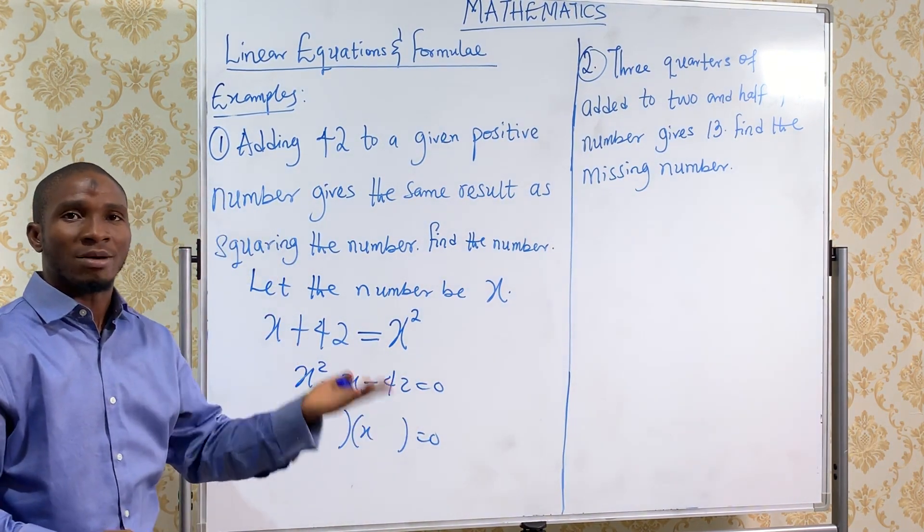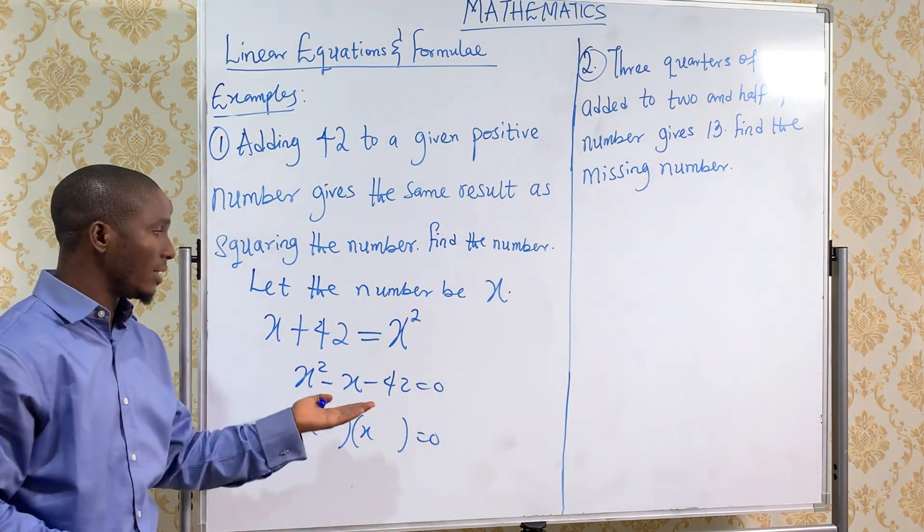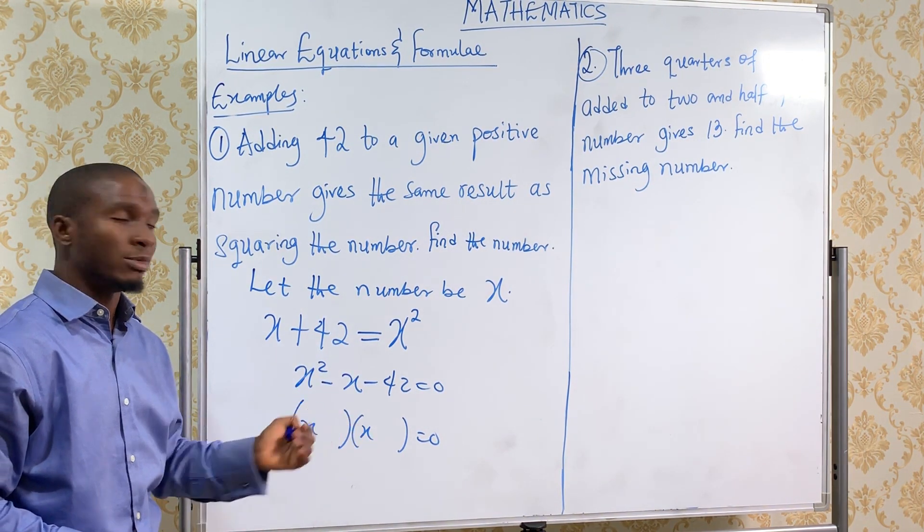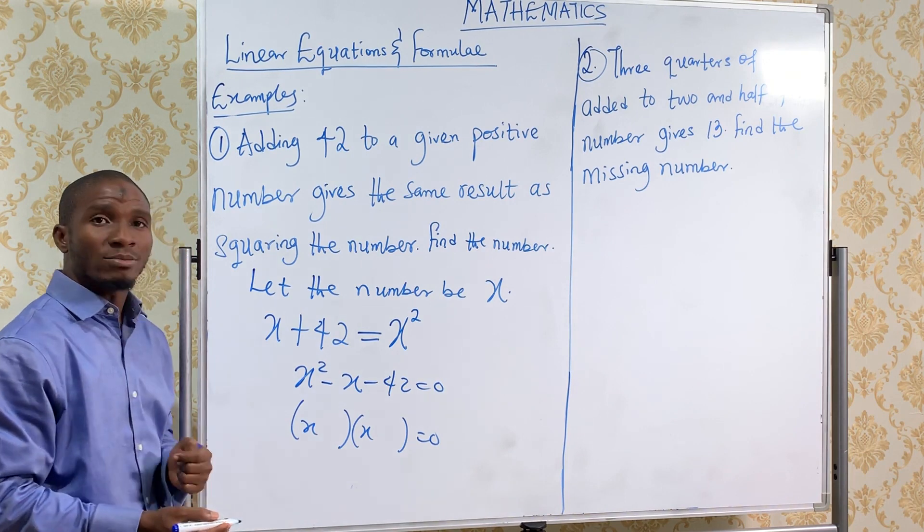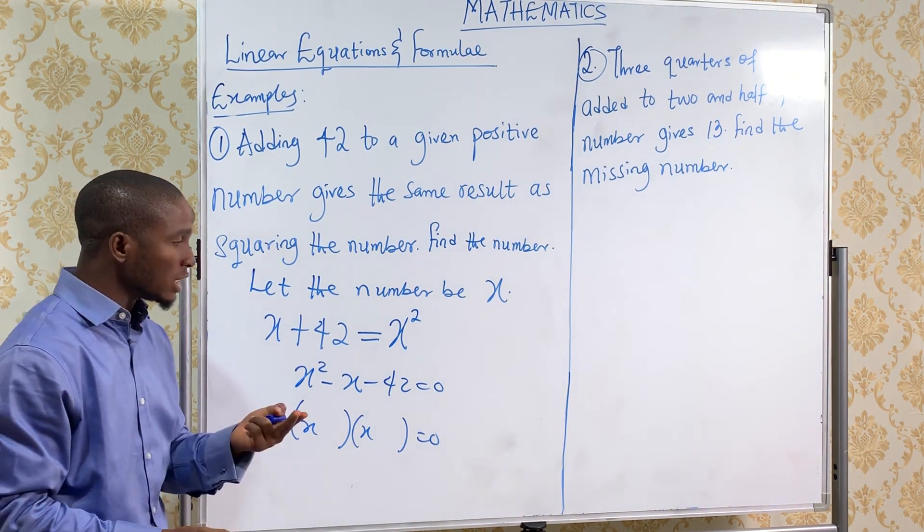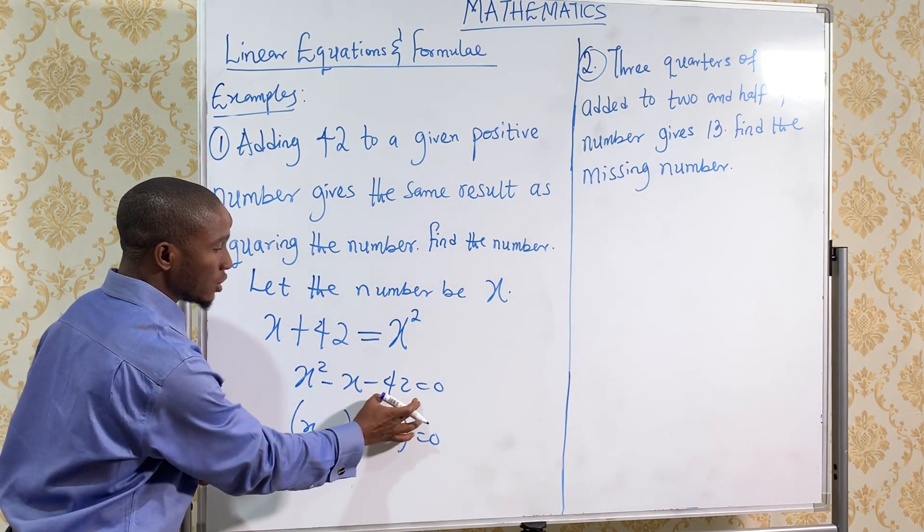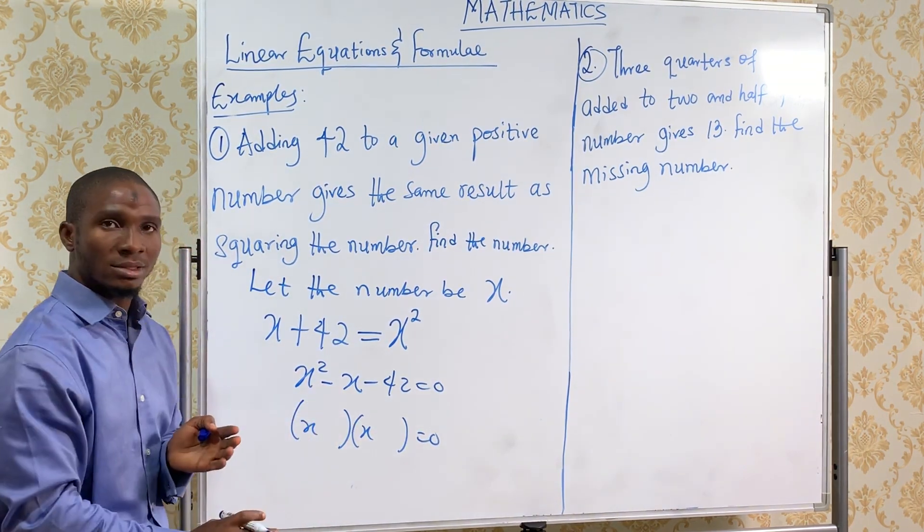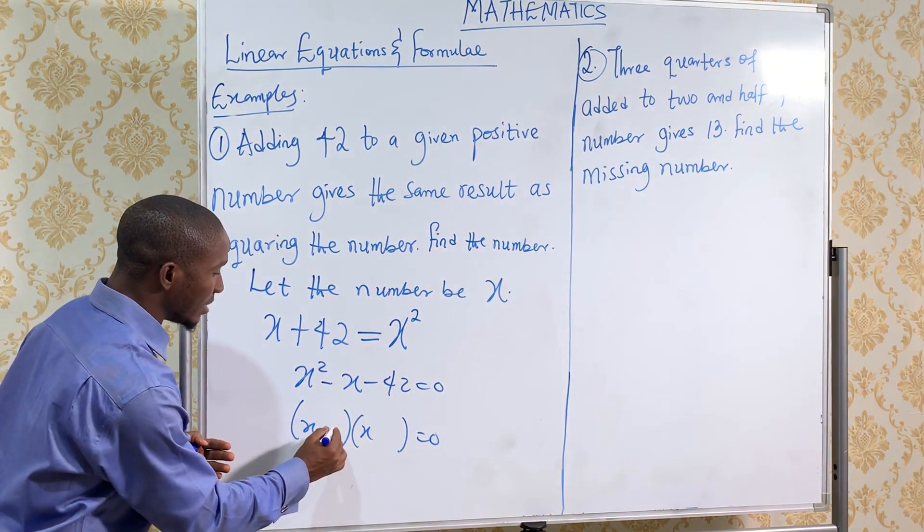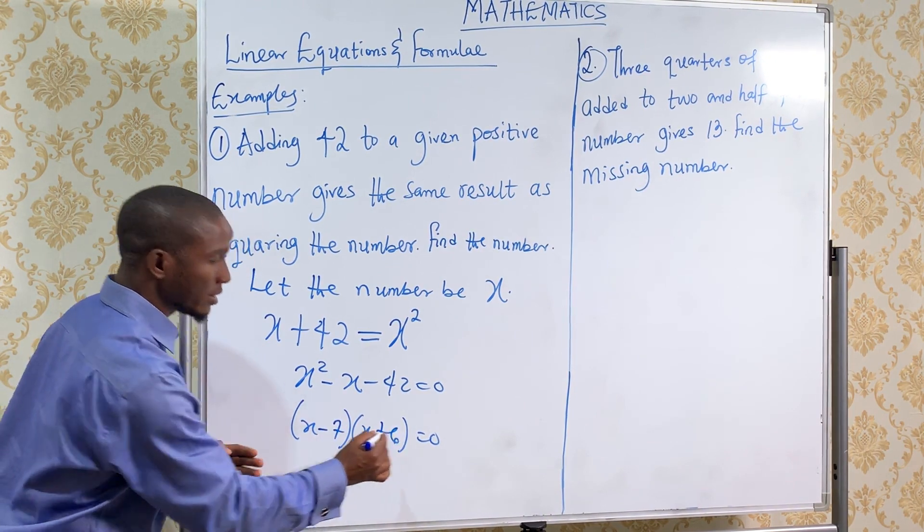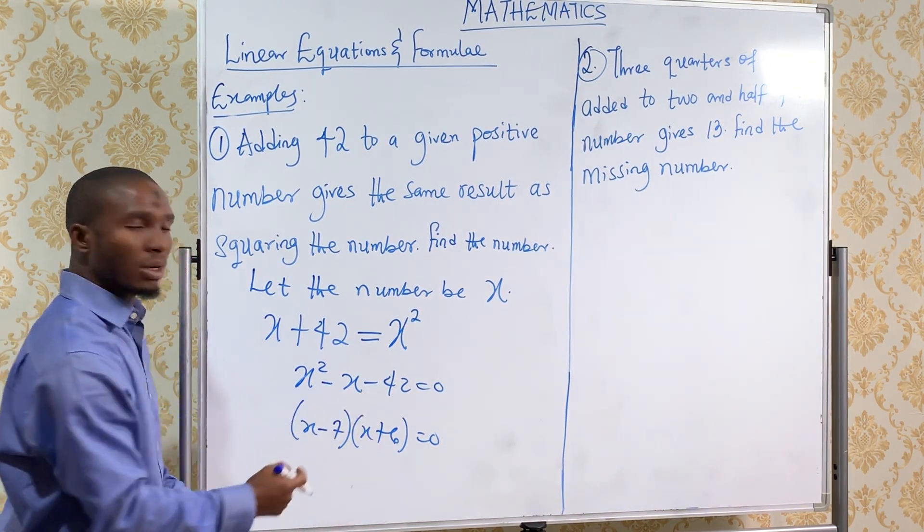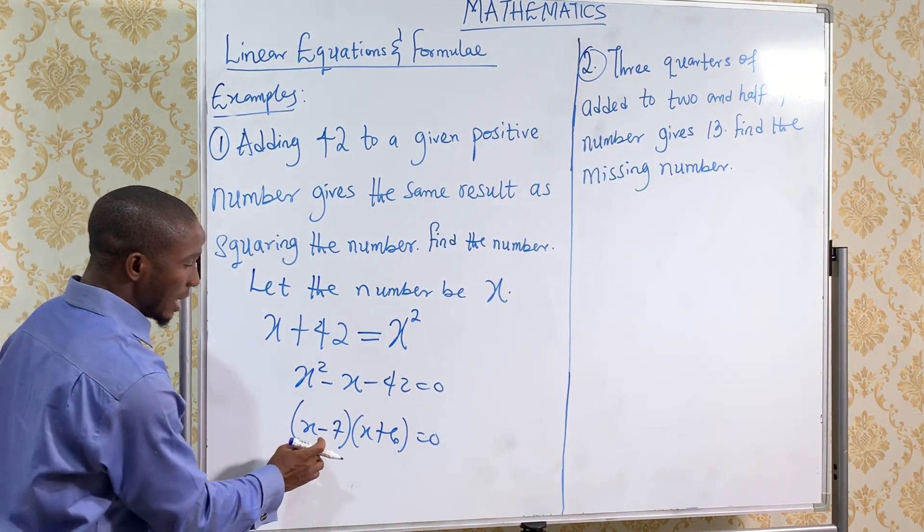This factorization has been discussed in our previous video, so you can watch this on quadratic equations. We've solved this before. You think of two numbers that if you multiply give you minus 42 and if you add give you minus x. Those two numbers are minus seven and plus six. If you multiply it you get minus 42, and if you add it you get minus x.